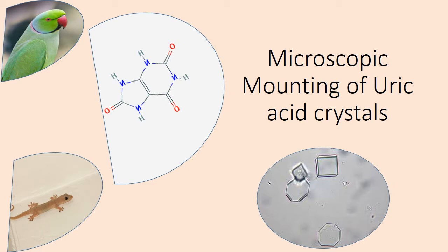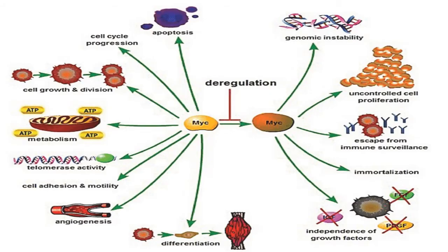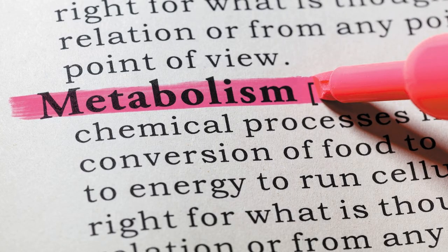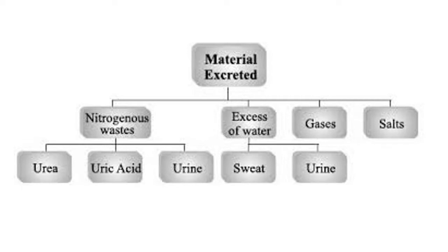Excretion is a process in which metabolic waste is eliminated from an organism. It is an essential process in all forms of life. During life activities such as cellular respiration, several chemical reactions take place in the body. These reactions are known as metabolism. These chemical reactions produce waste products like carbon dioxide,